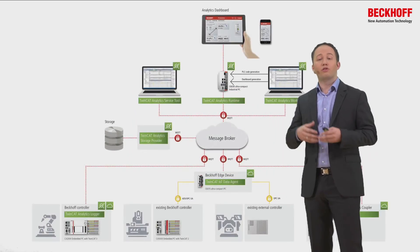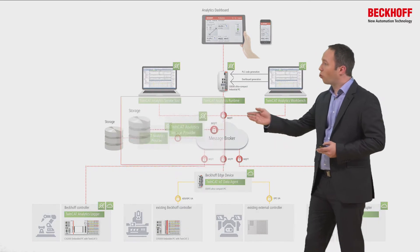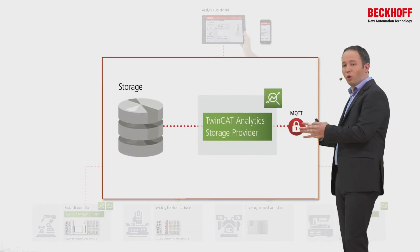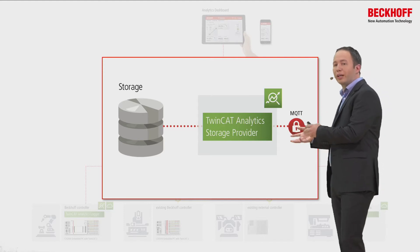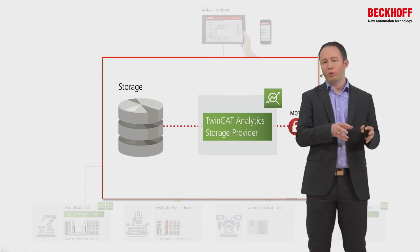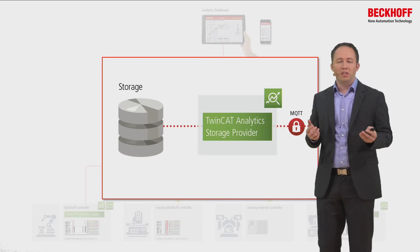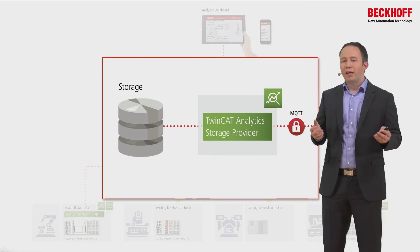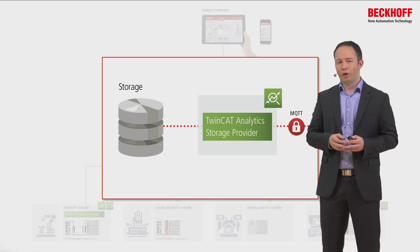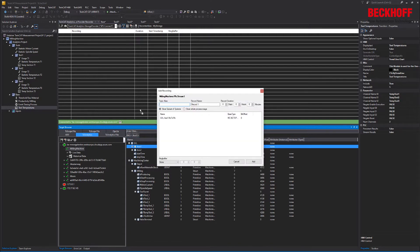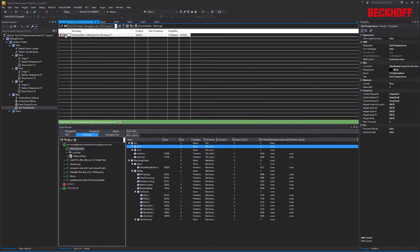In the next step, we can store the communicated data using the TwinCAT Analytics Storage Provider. It connects to the message broker and consumes all the data, storing it in a storage system. This could be a complex database like Microsoft SQL Server, an easy blob store, or a file-based storage system. Importantly, the complete workflow is encapsulated — it is not necessary for the user to know difficult or special command languages.